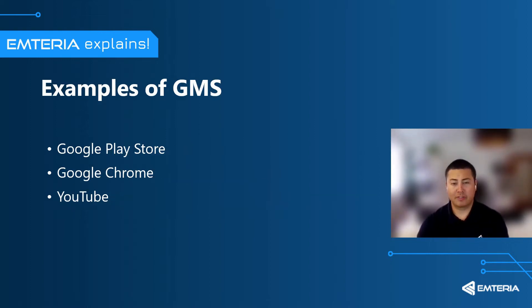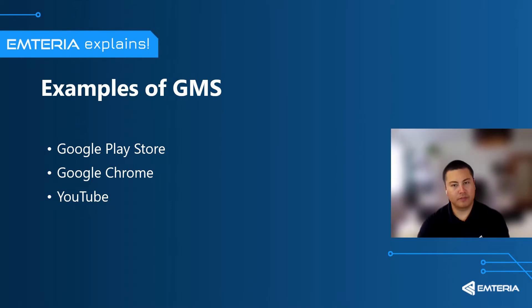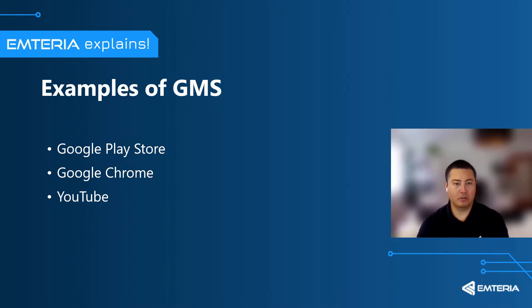What are some examples of GMS apps? Google Mobile Services are typically pre-installed on Android devices such as smartphones, tablets, and smart TVs. Examples of popular applications within GMS include Google Play Store, Google's web browser Chrome, and the video platform YouTube.